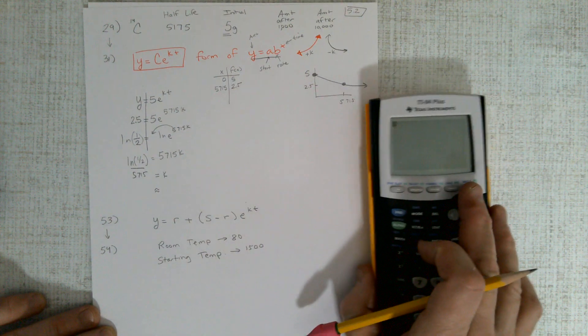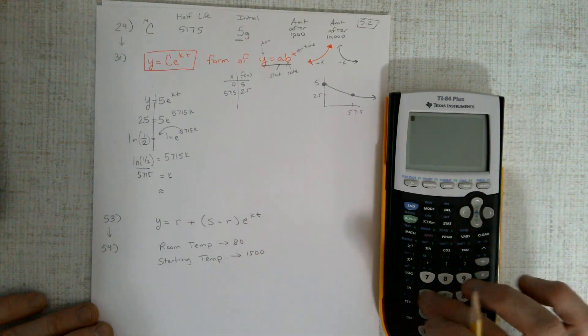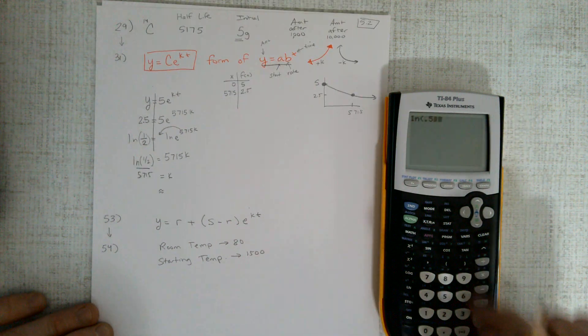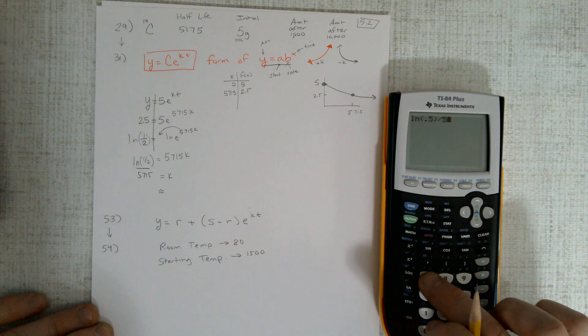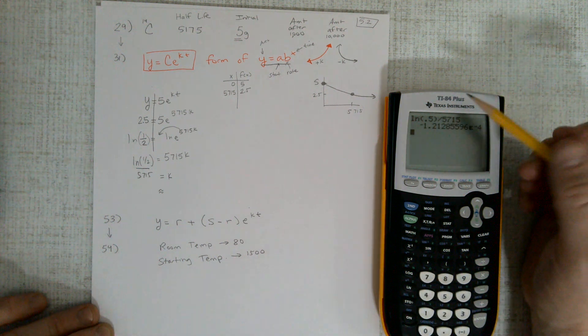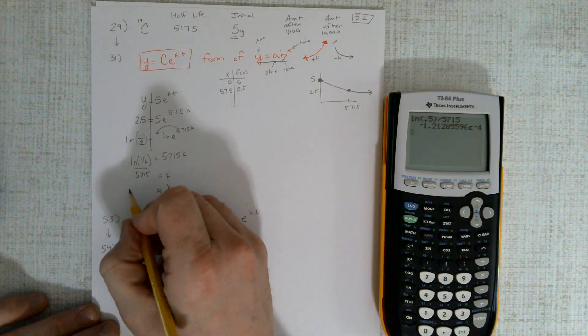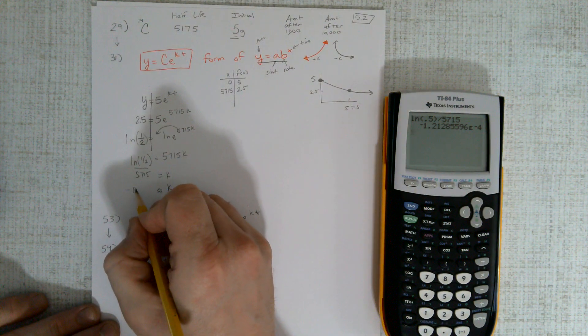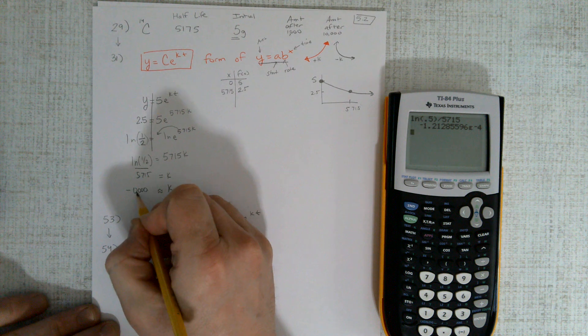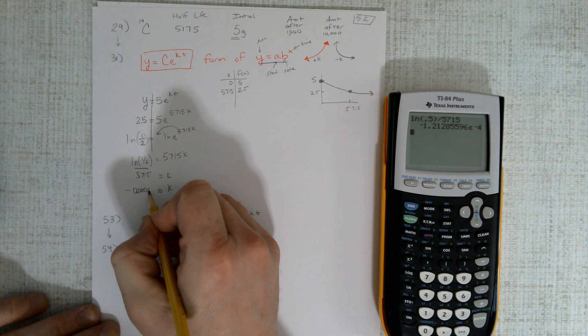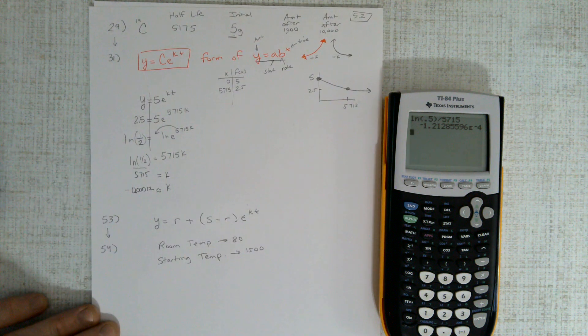Natural log of 0.5 divided by 5,715 is this tiny little exponent here. If I were to write that out, it would be negative 0.000123 and then 12. So that's my k value.